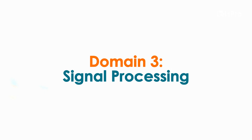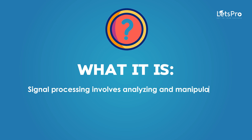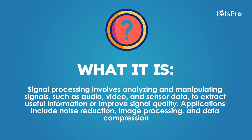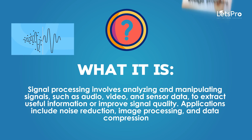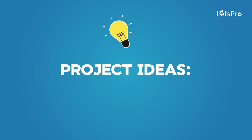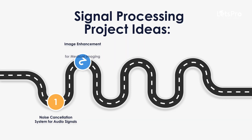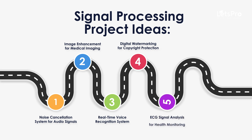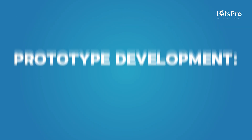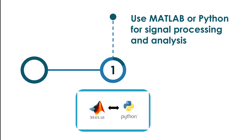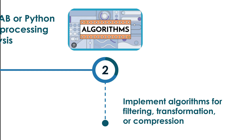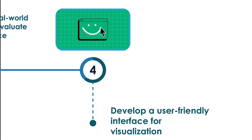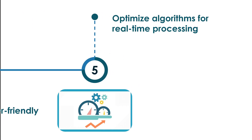Domain 3: Signal Processing. Signal processing involves analyzing and manipulating signals such as audio, video, and sensor data to extract useful information or improve signal quality. Applications include noise reduction, image processing, and data compression. Project ideas include: noise cancellation system for audio signals, image enhancement for medical imaging, real-time voice recognition system, digital watermarking for copyright protection, and ECG signal analysis for health monitoring. For prototypes, use MATLAB or Python for signal processing and analysis, implement algorithms for filtering, transformation, or compression, test with real-world signals, and optimize for real-time processing.